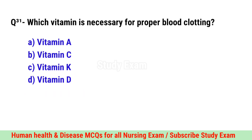Question No. 31. Which vitamin is necessary for proper blood clotting? Correct option is C. Vitamin K.